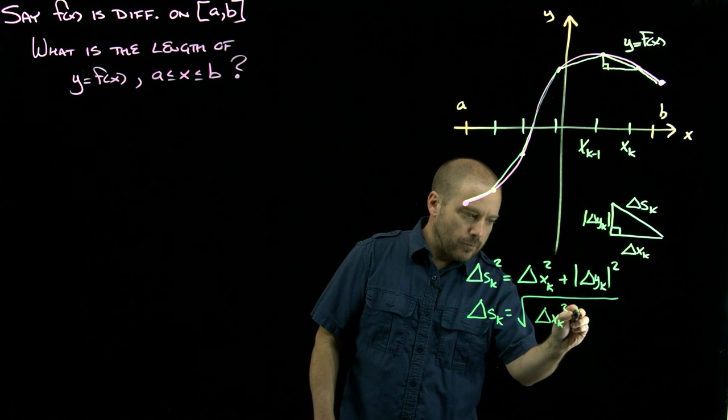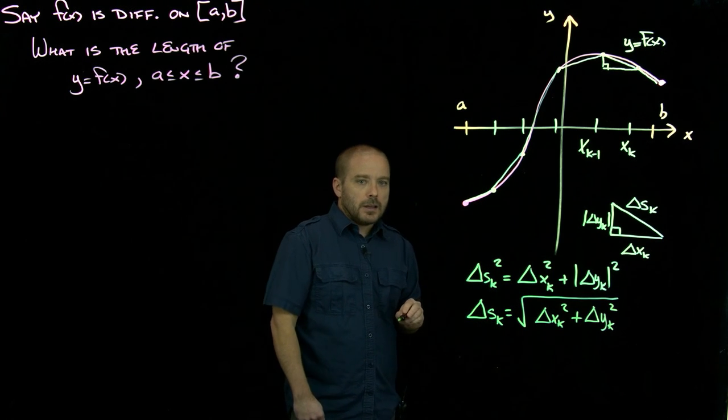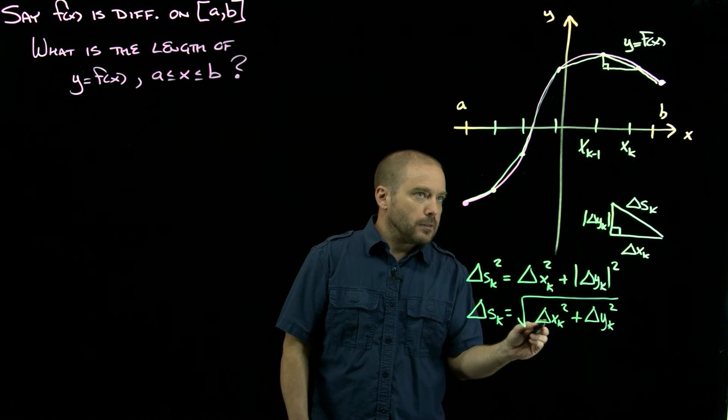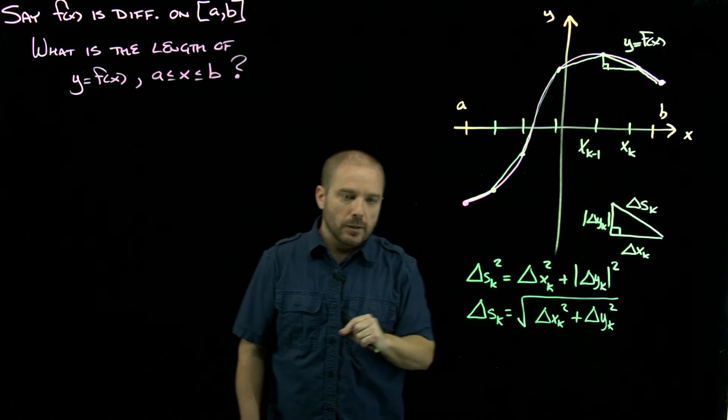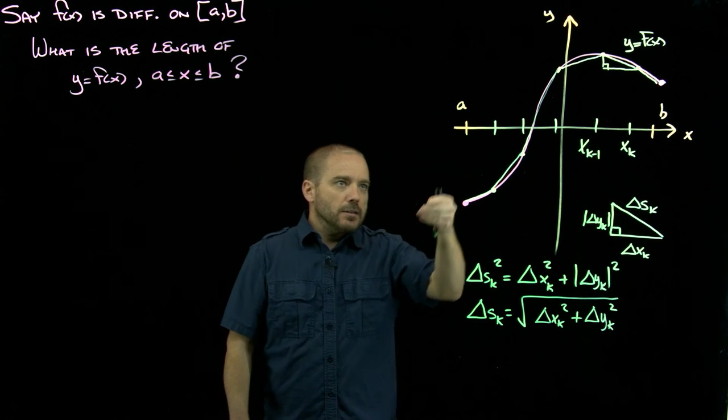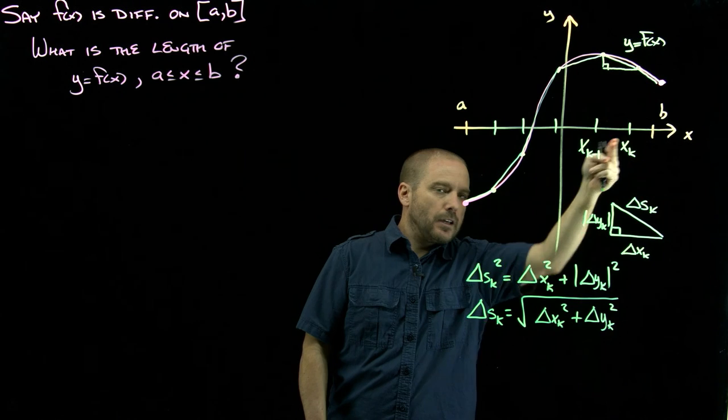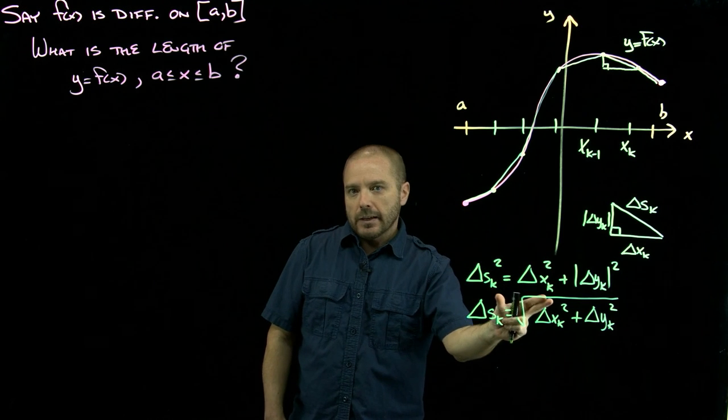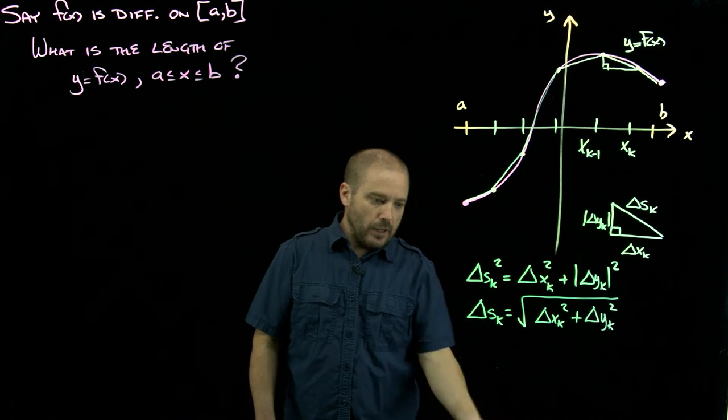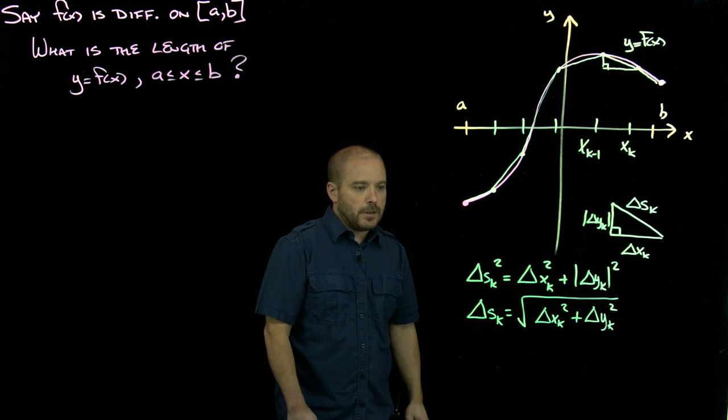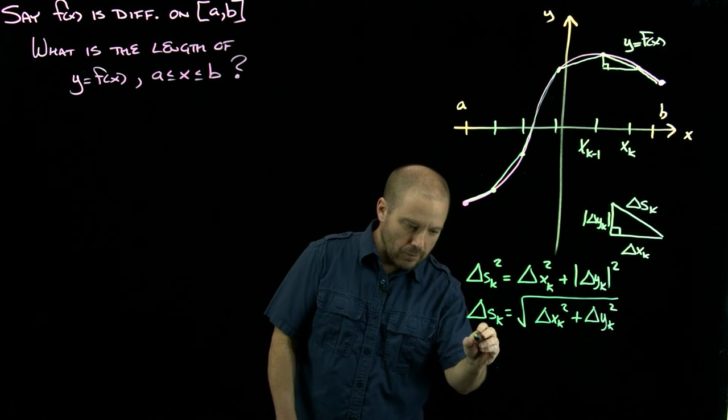Now I'm dropping the absolute value. Think about where we want to head with this. We're going to come up with a Riemann sum that represents the sum of the length of all these line segments. That Riemann sum is going to lead to an integral with respect to x, because we've partitioned the x axis. Ultimately we'd like this thing expressed only in terms of delta x sub k.